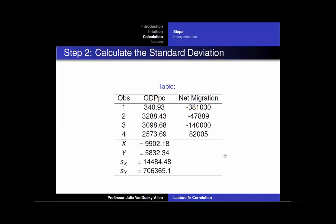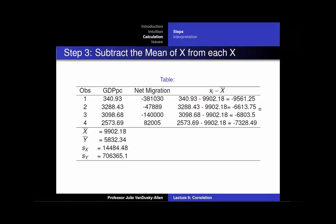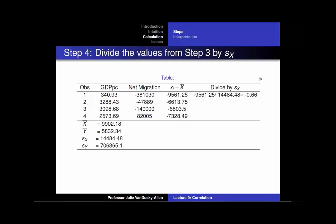Next, you calculate the standard deviations of x and y. Then you subtract the mean of x from each x. For example, 340.93 minus 9902.18 equals negative 9561.25. You do this for the rest of the observations. Then you divide the values from step 3 by the standard deviation of x: negative 9561.25 divided by 14484.48 equals negative 0.66. You do this for the rest of the observations.